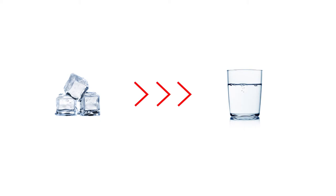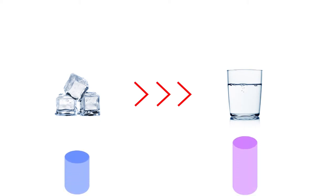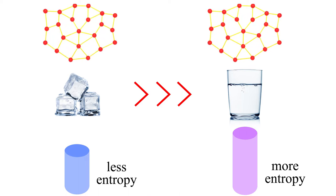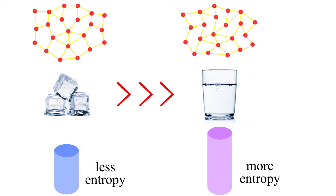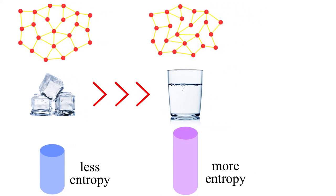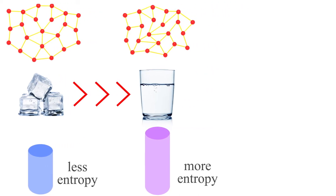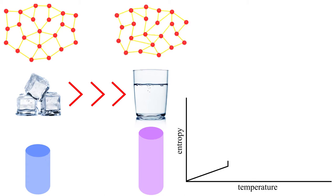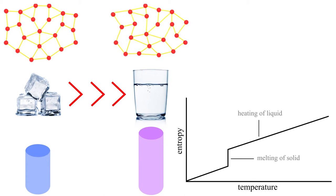Phase change in any sort of substance brings entropy into the picture. In simple terms, entropy is a measure of molecular randomness or disorder. As we know, liquid water allows more freedom of molecules than a solid, thus resulting in more randomness and higher entropy.